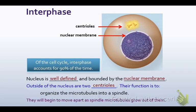The centrioles will begin to move apart as spindle microtubules grow out of them. This is not a process you need to know in extreme detail — just know that these are the things that are going to help the cell pull itself apart into two new cells.